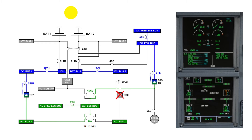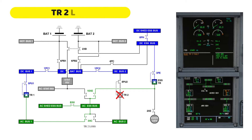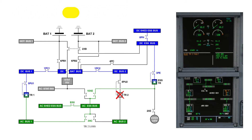If TR2 fails, TR1 automatically supplies DC Bus 2 through DC Bus 1 and DC Bat Bus. The DC Essential Bus supply is automatically transferred from DC Bat Bus to AC Essential Bus through the Essential TR.